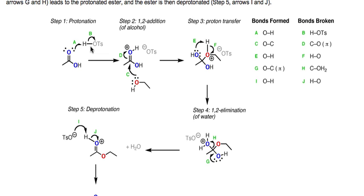We start with our carboxylic acid and add a strong acid — in this case tosic acid, HOTs. In the protonation step we form a bond between the oxygen and the hydrogen. This has one important effect: it makes the carbonyl carbon more electrophilic than before, increasing the positive charge on that carbon so it becomes more reactive toward nucleophiles.